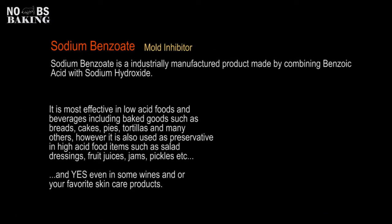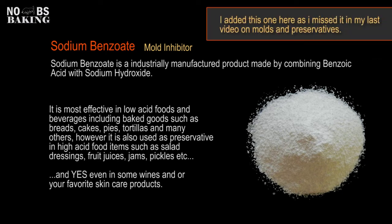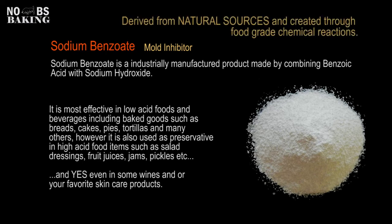Another common preservative used in a broad range of food and beverage products is sodium benzoate, often referred to as benzoate of soda — it is not the same as baking soda, so keep that in mind. Sodium benzoate is industrially manufactured into a crystalline, odorless white powder made by combining benzoic acid with sodium hydroxide. Sodium benzoate does not occur naturally, but benzoic acid is found in many plants including cinnamon, cloves, tomatoes, various fruits and berries such as cranberry, and is also created by certain bacteria during the production of fermented dairy products such as yogurt.